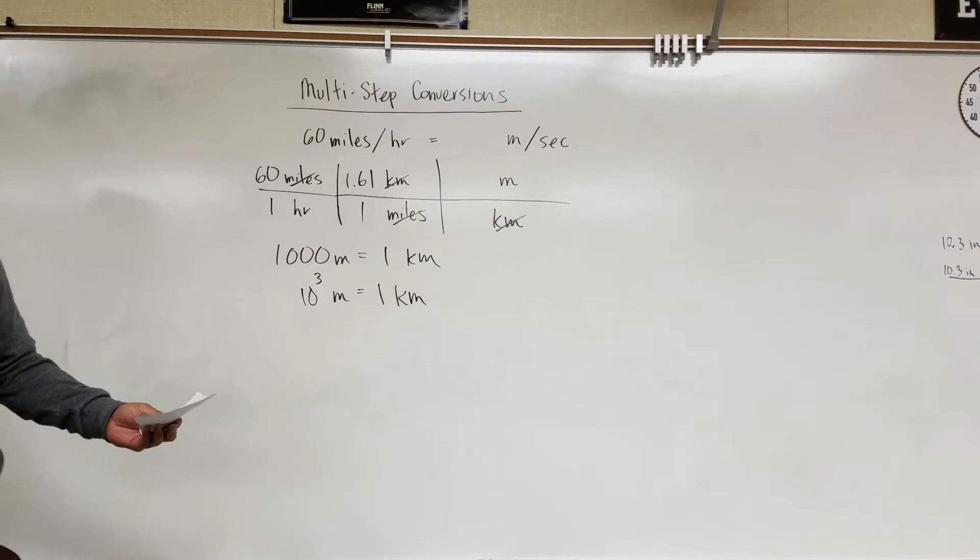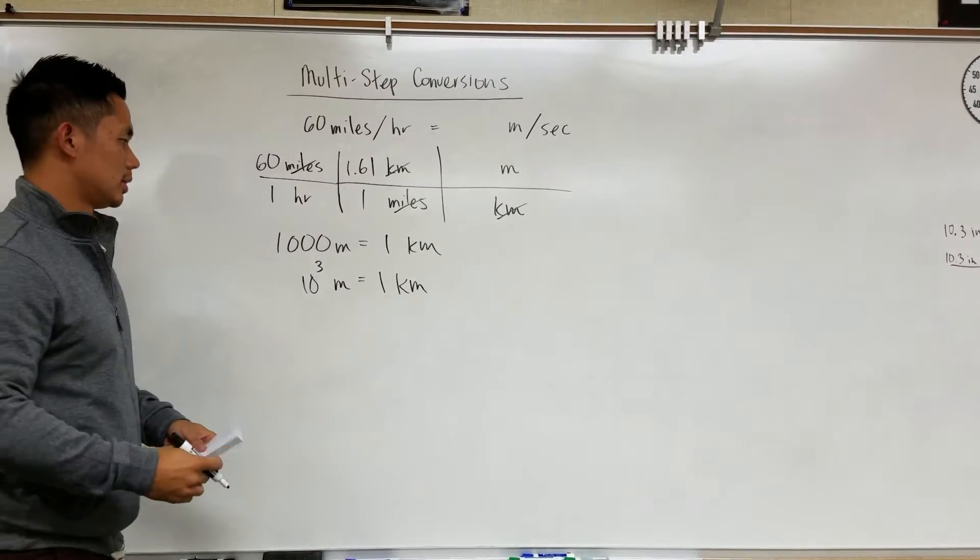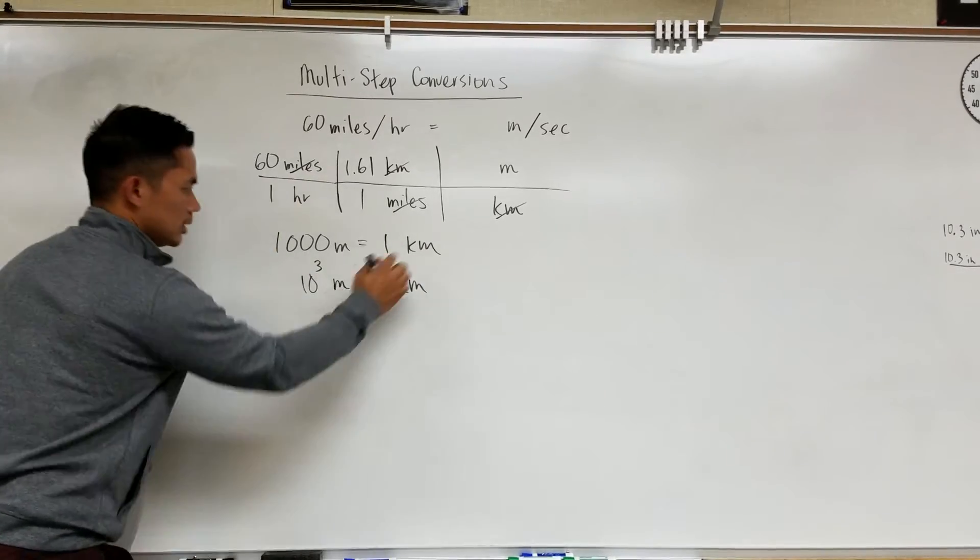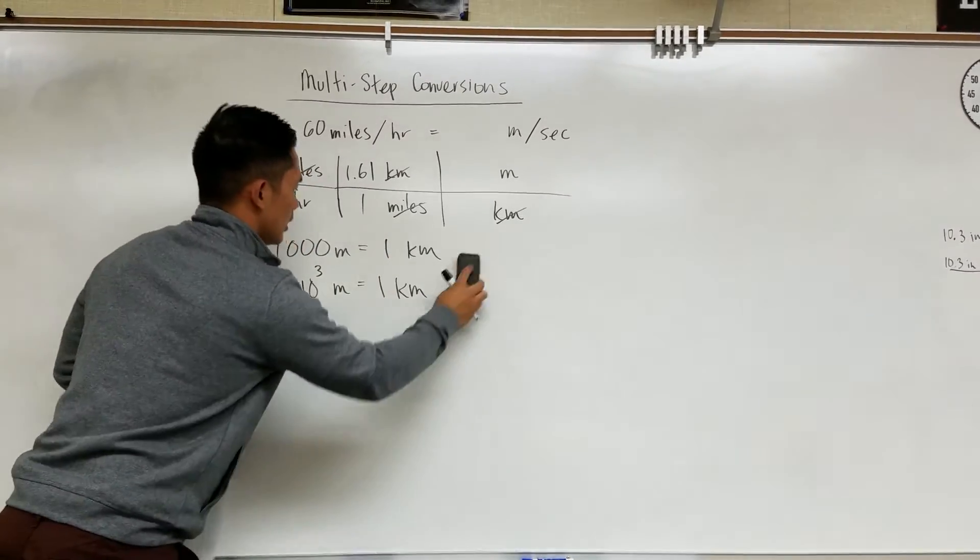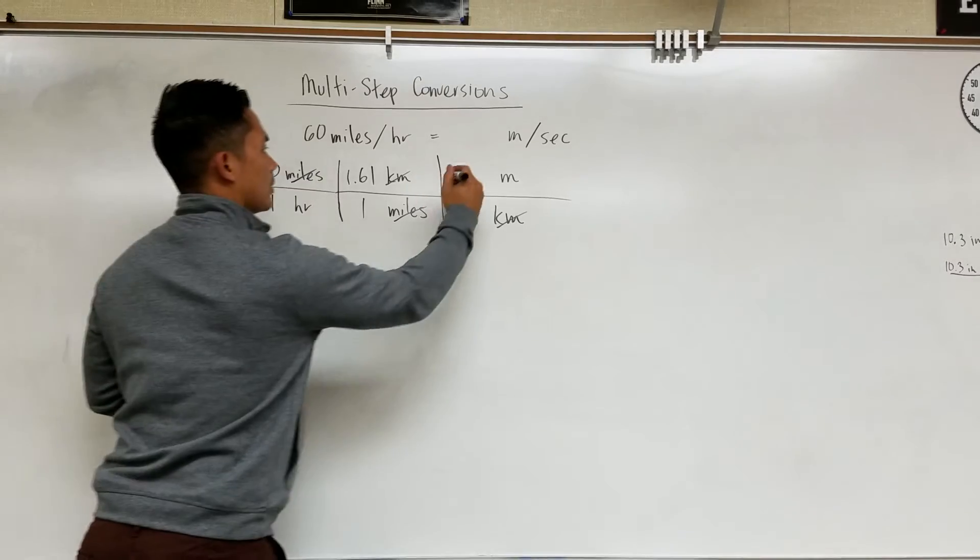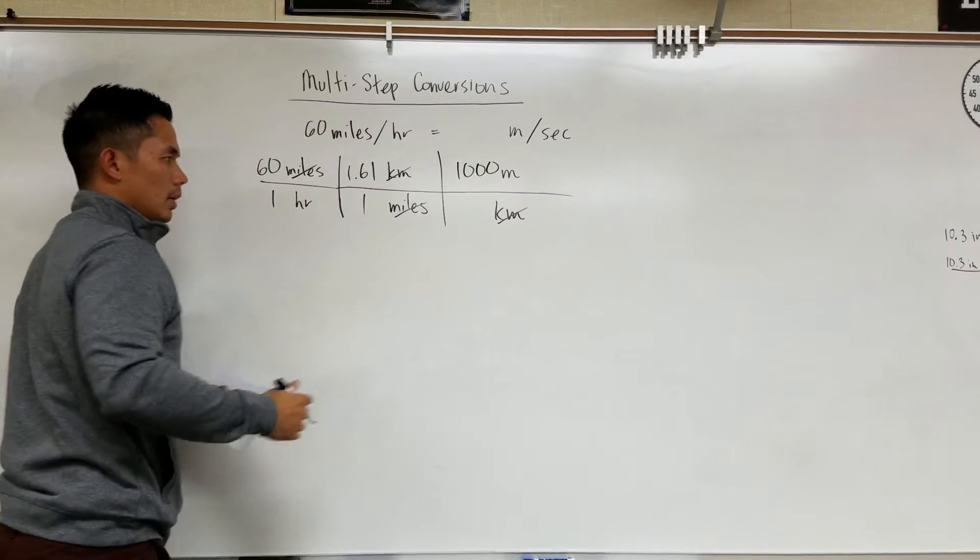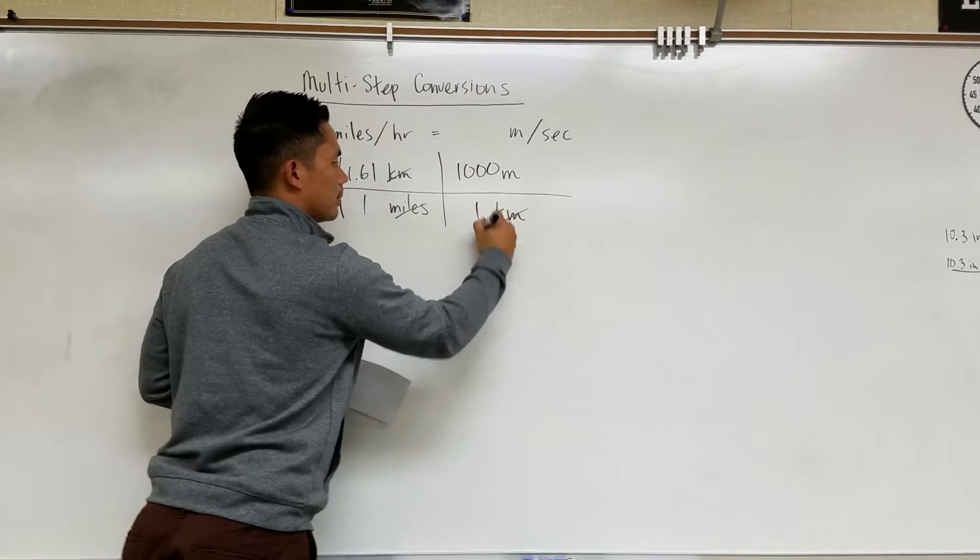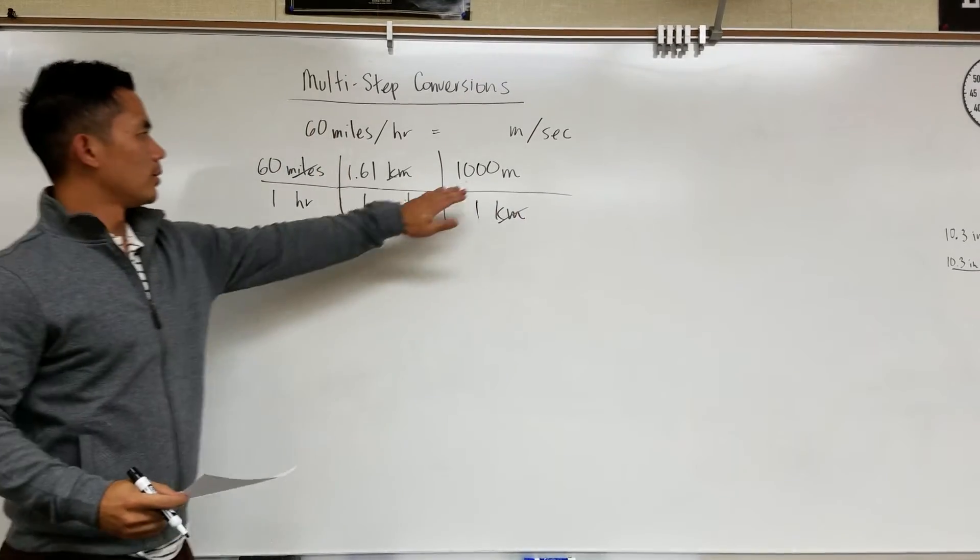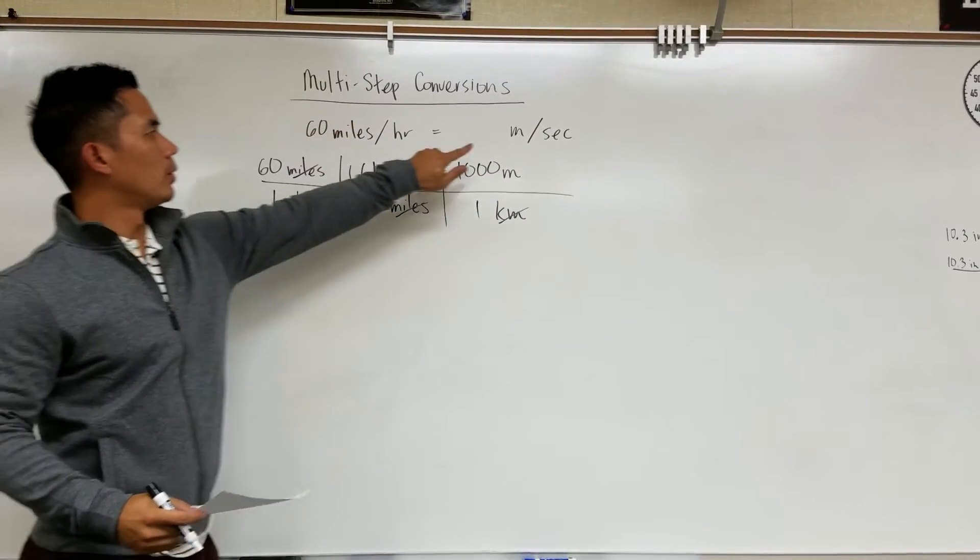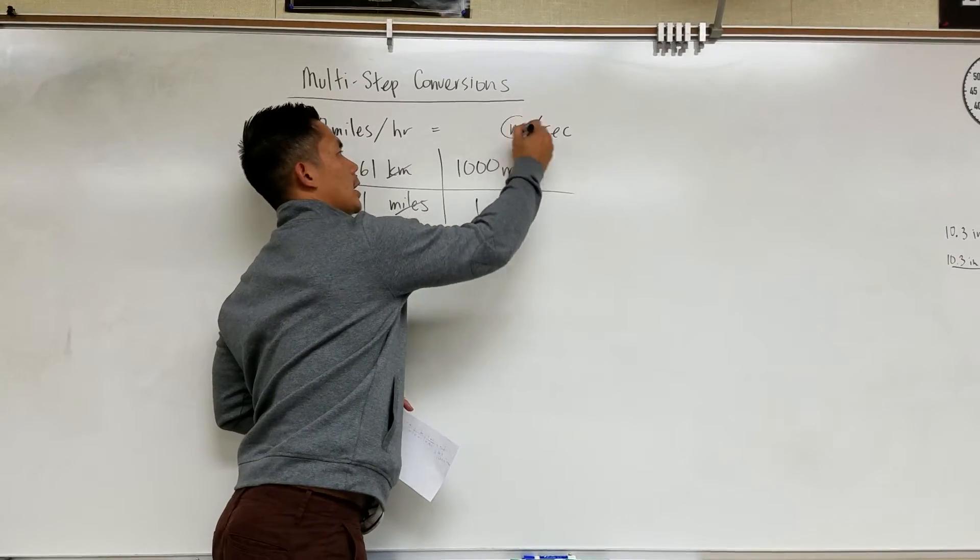So whichever way you want to write this here it will take you to the same exact answer. But I'm going to use this one. So I'm going to write that there are 1,000 meters for every kilometer. So this takes care of the first part. We now arrive at meters.